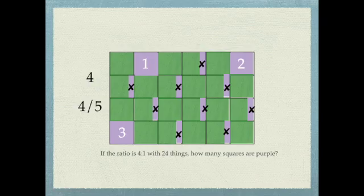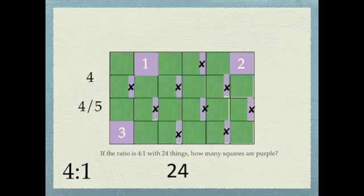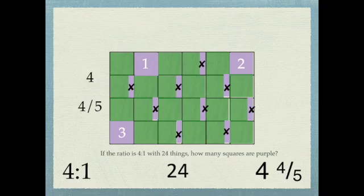If the ratio is 4 to 1 with 24 things, how many squares are purple? The ratio is 4 to 1. 4 and 4/5 squares are purple.